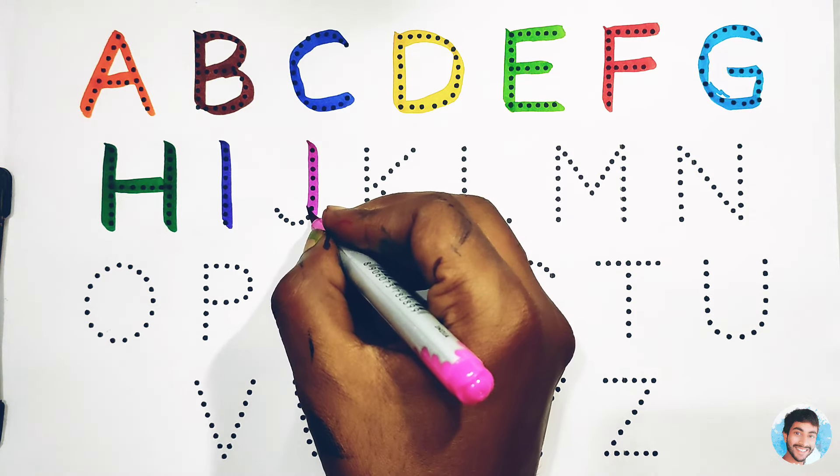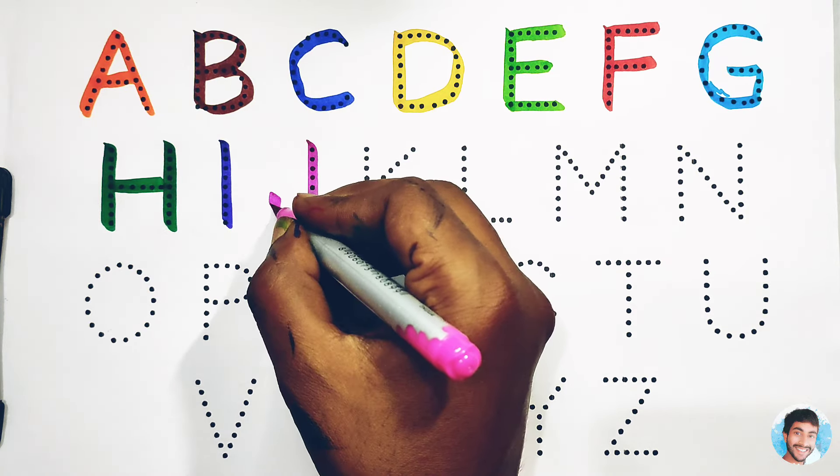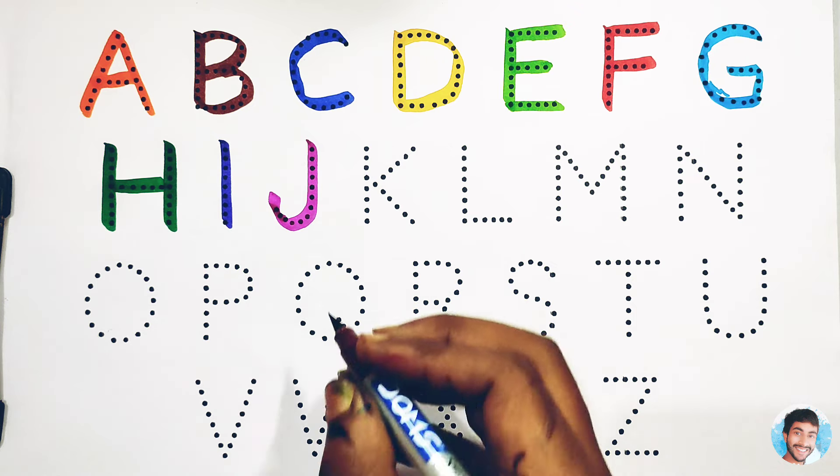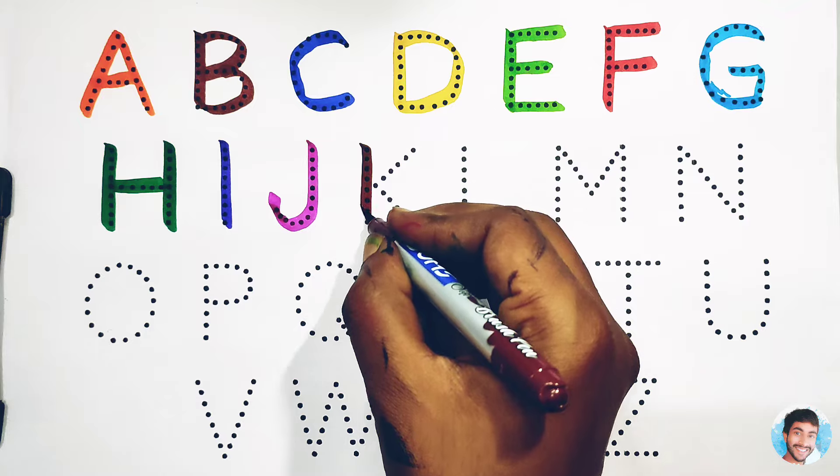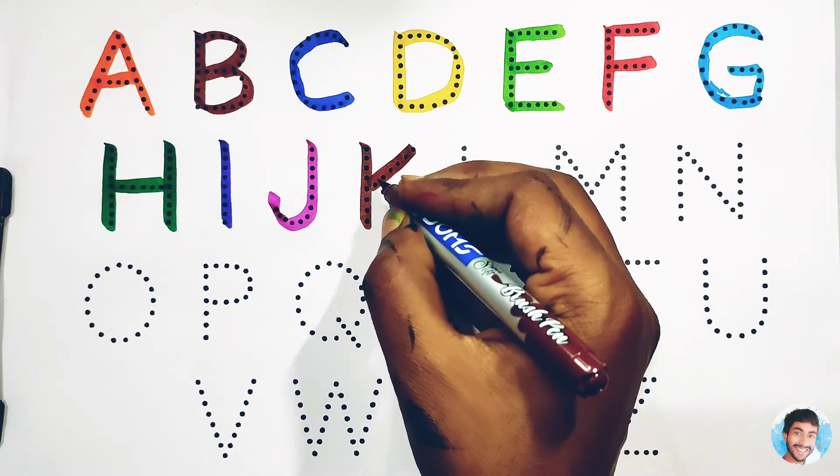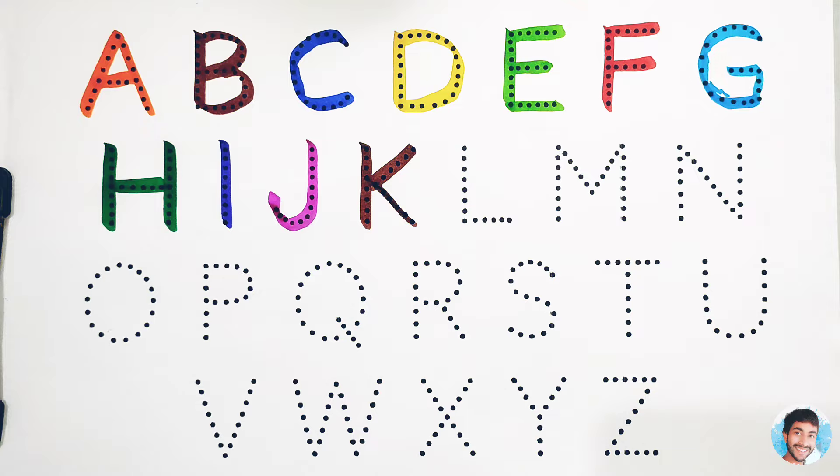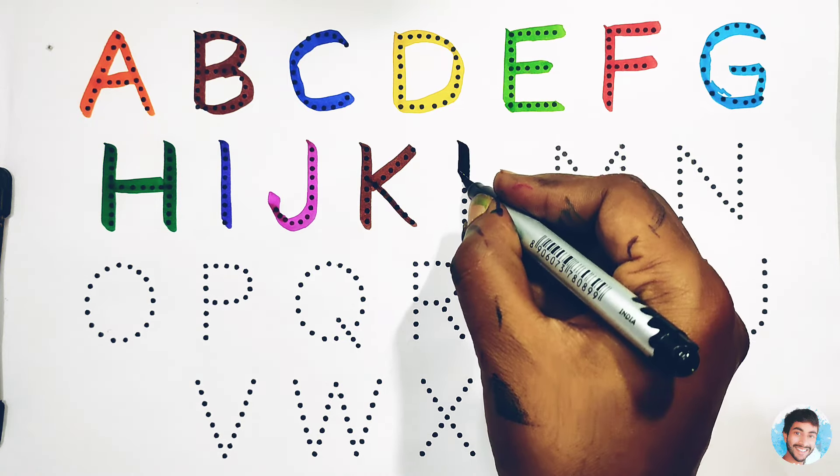Pink colour J, J for Jug, Jug means Mag. Brown colour K, K for Kite, Kite means Padang. Black colour.